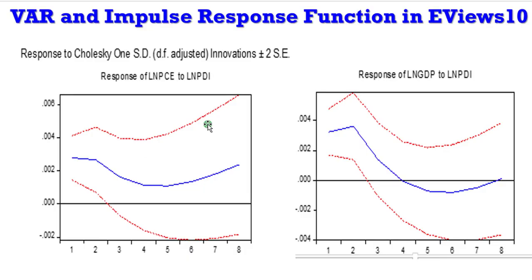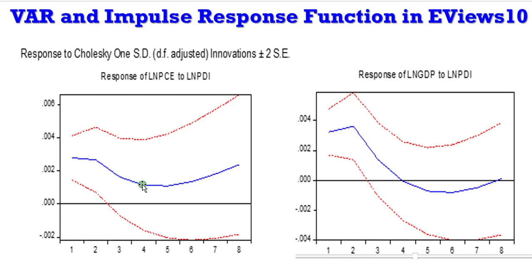Looking at this graph, how will you explain the reaction or response of PCE to PDI? From the IRF graph, we can see that at the earlier stages there is not much reaction from PCE — it's almost stable, though positive because it's above the zero line. But from period 2 downward to period 4, PCE gradually declines. Between period 4 and period 5, PCE is in a stable state.